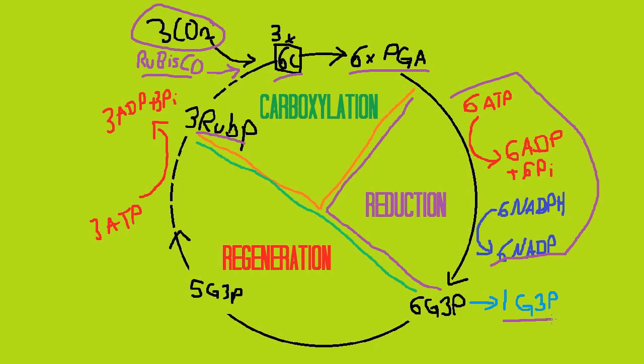One out of these six goes on to produce organic materials like glucose, and five of them react with three ATP molecules to produce three ADP molecules, three inorganic phosphate molecules, and three RuBP molecules.